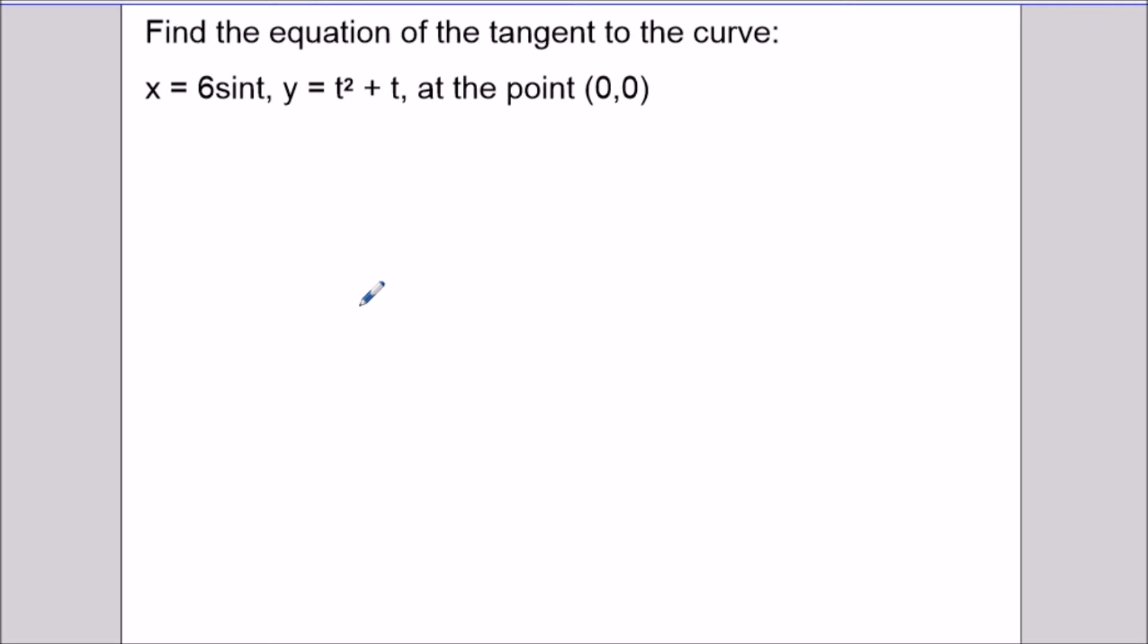What's up everybody? Vin teaches math here and today we're writing equations of tangent lines to parametric curves. So we have a parametric curve defined with an x and y component in terms of time. And we want to write the equation of a line that passes through (0,0). For both of these questions here, we want to make use of the formula.